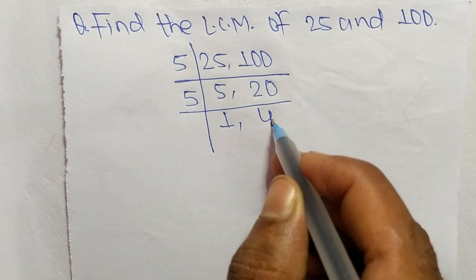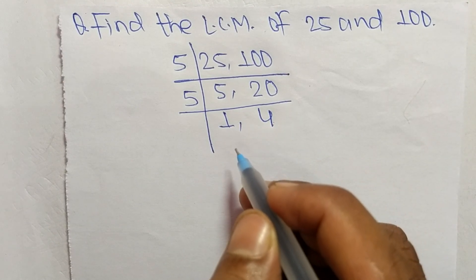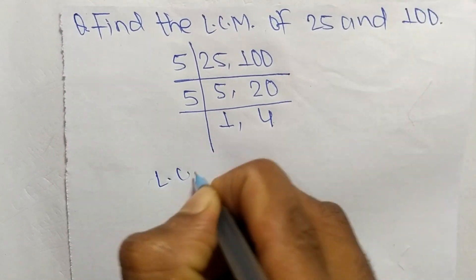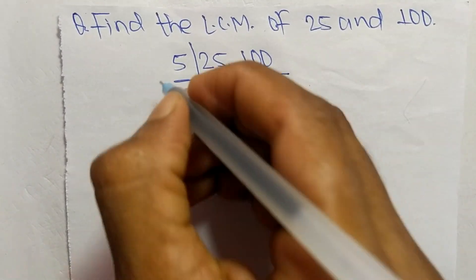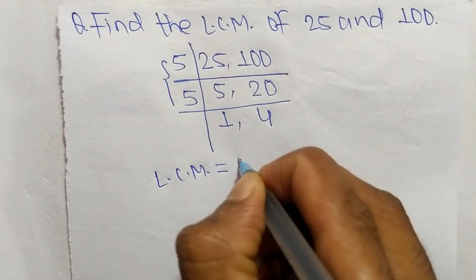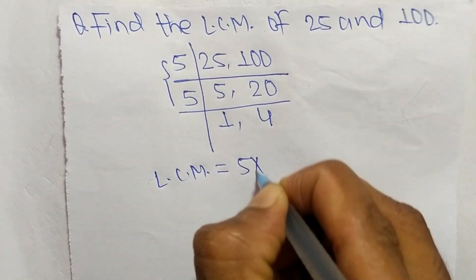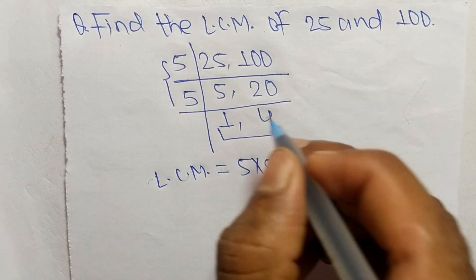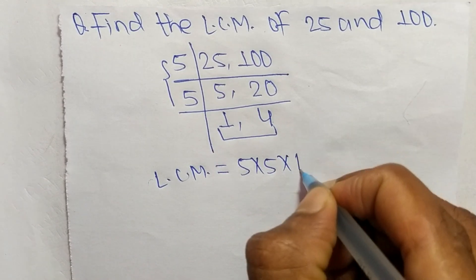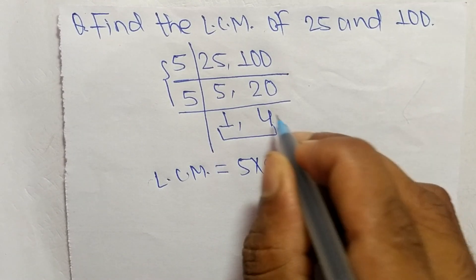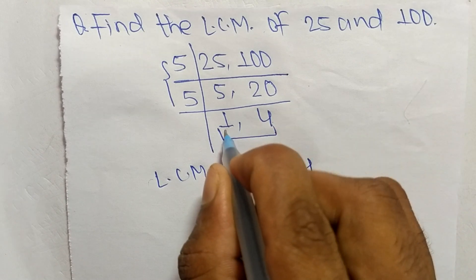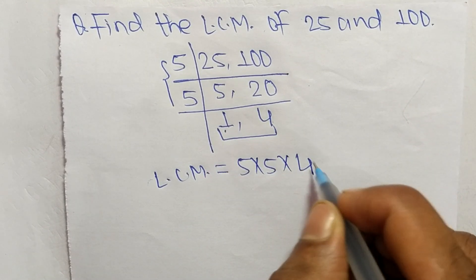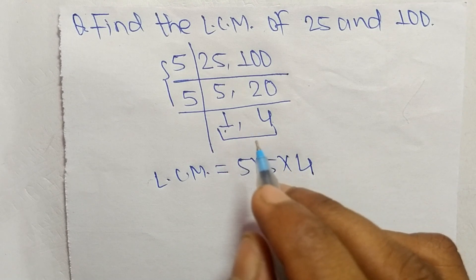At last we have 1 and 4, which are not exactly divisible by the same number. The LCM is built from the divisors: 5 times 5 from the division steps, and then 1 and 4 as the final quotients. We take only 4 and neglect 1, because multiplying any number by 1 gives the same result.